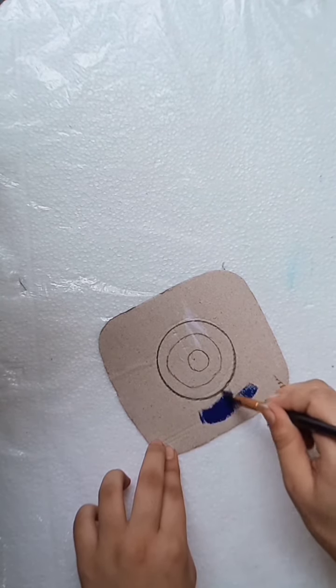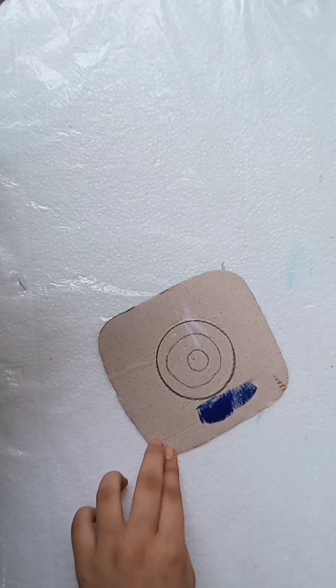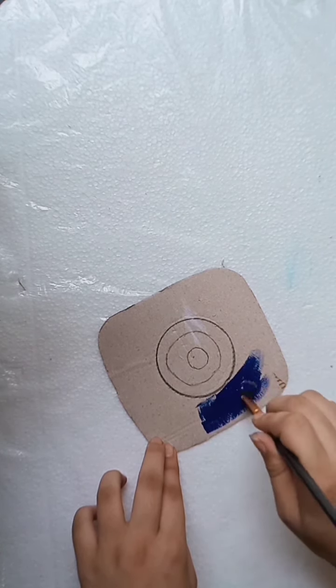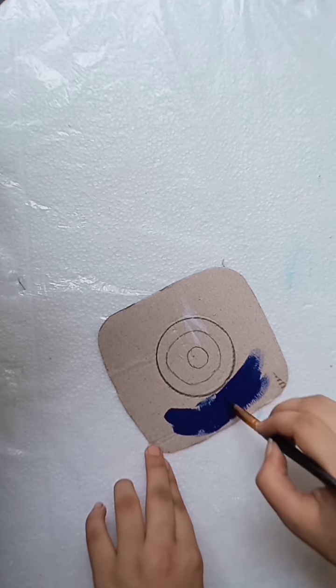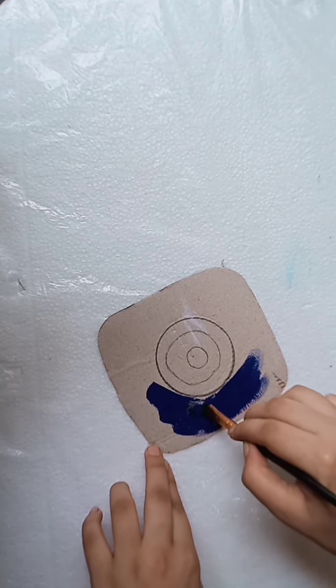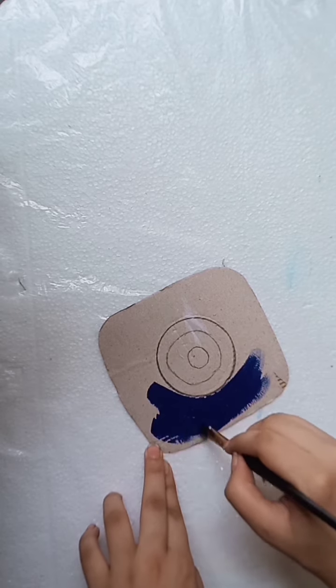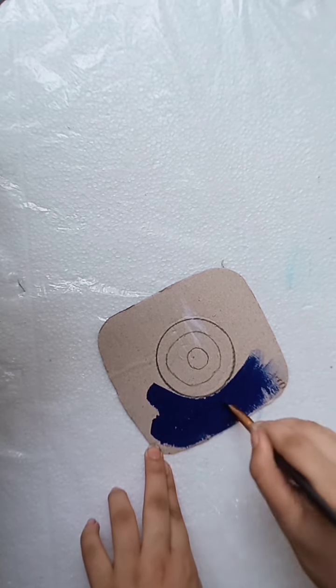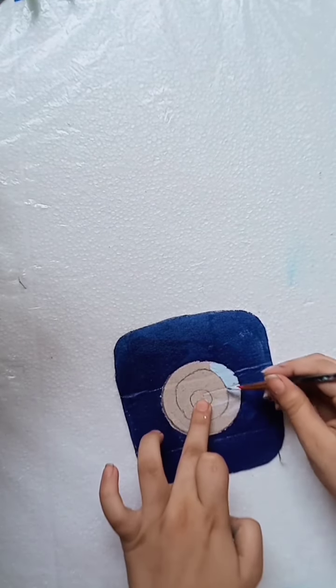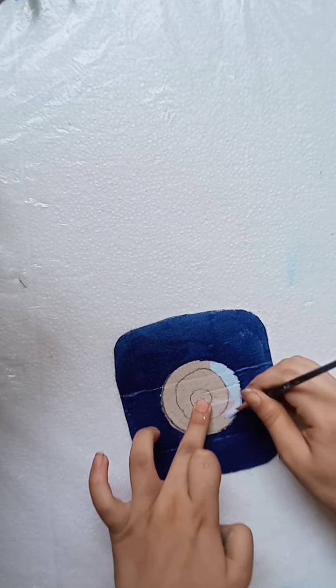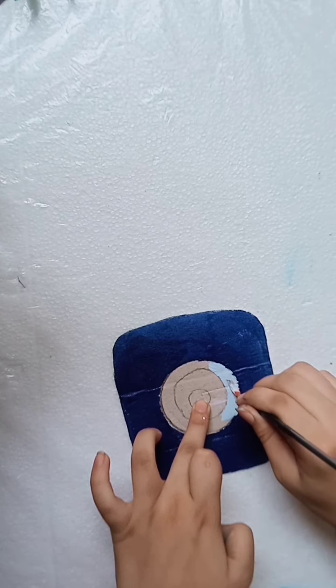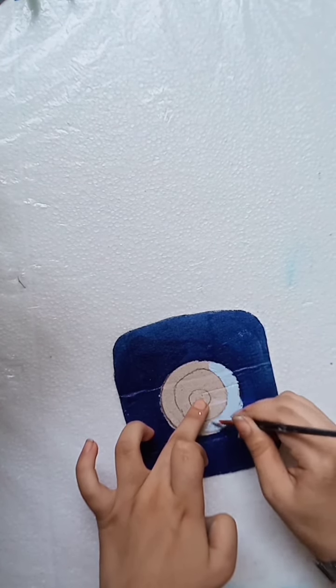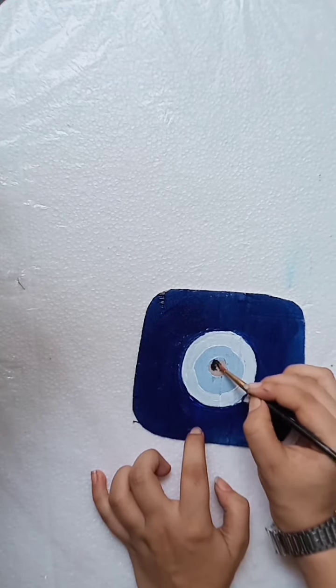Then we'll apply blue paint on the outside. We'll apply a white coat and then a black coat in the middle.